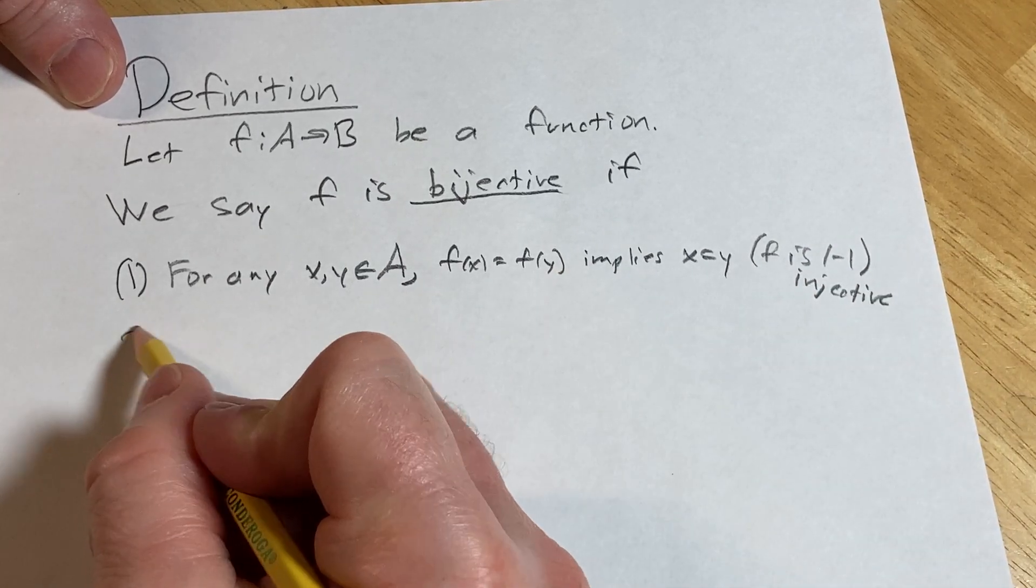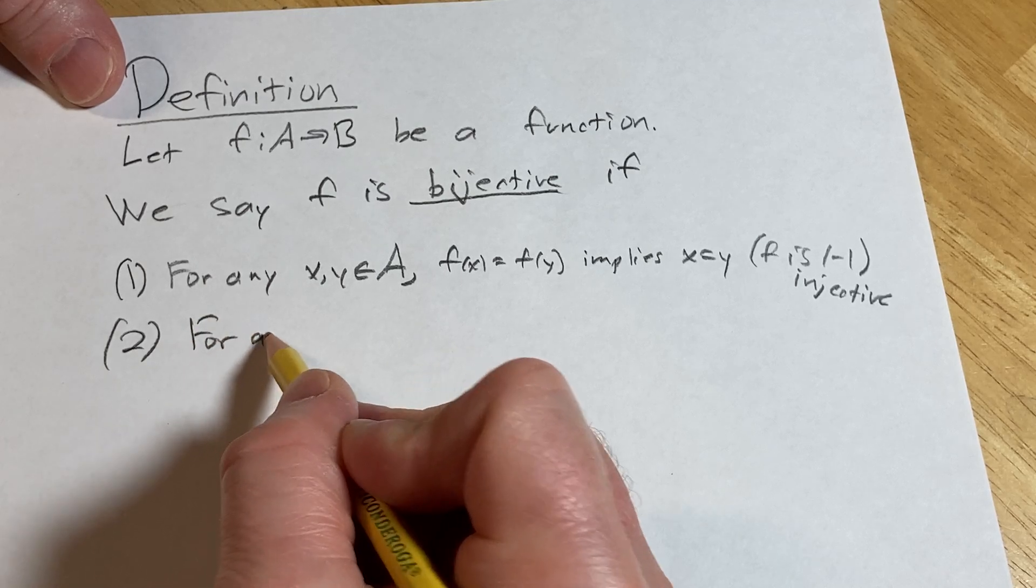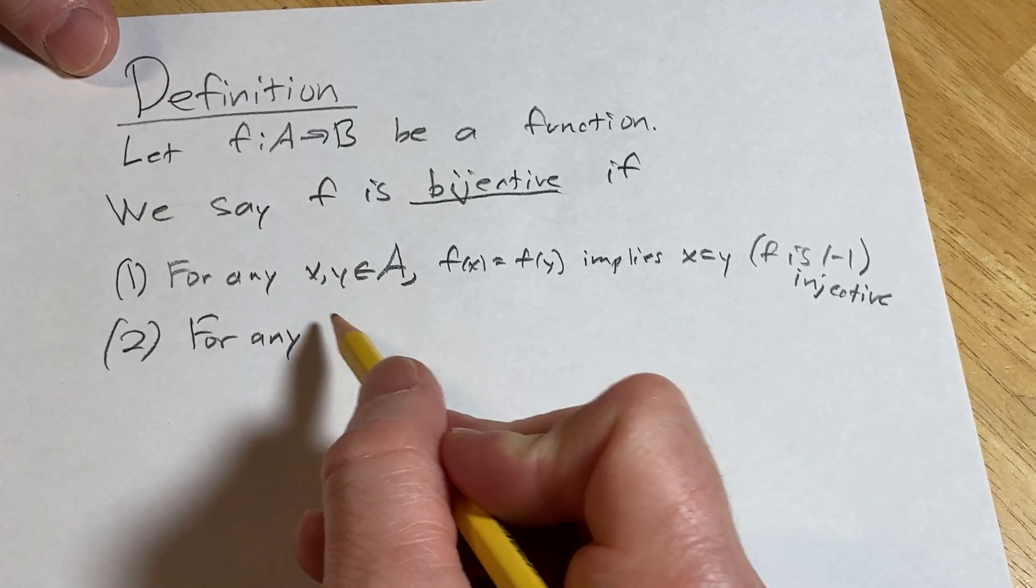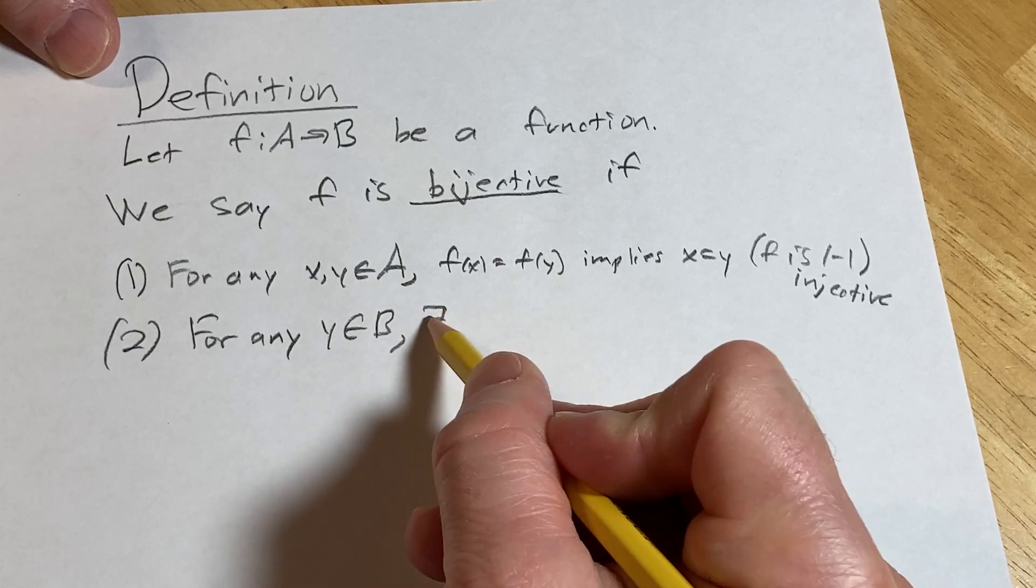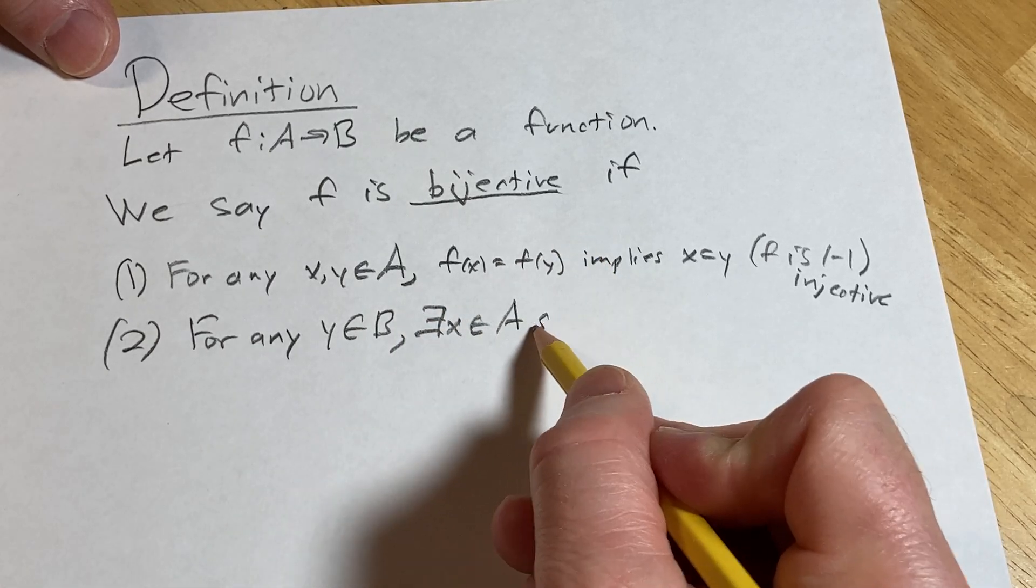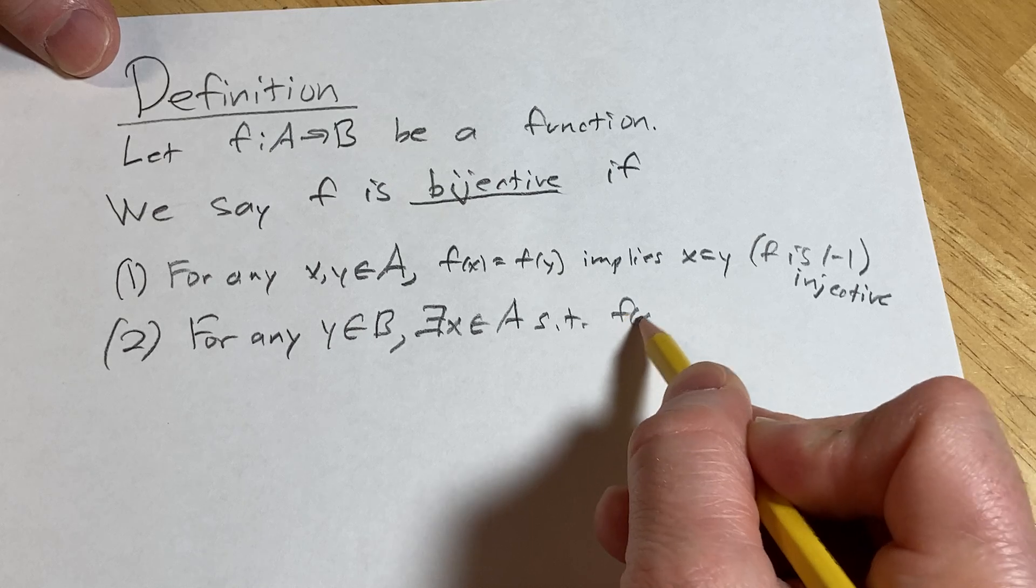Two: for any y in B, there exists an x in A such that f of x equals y.